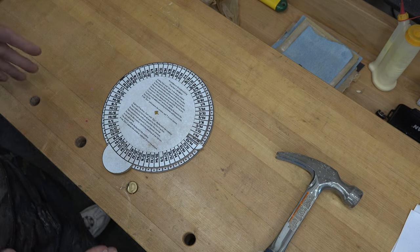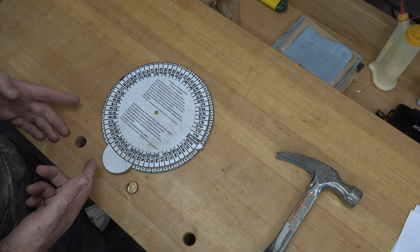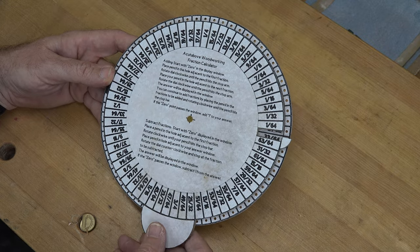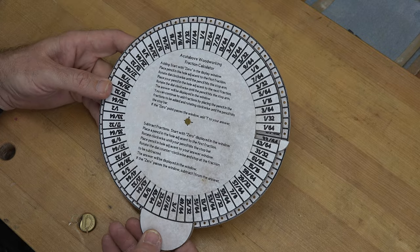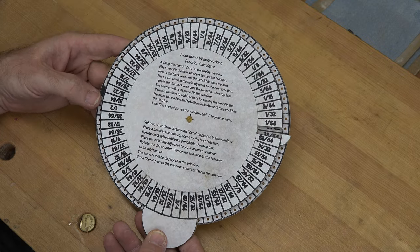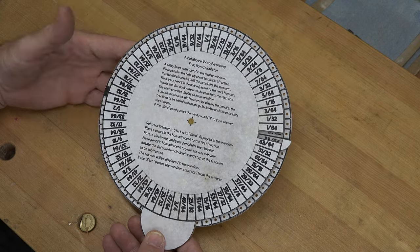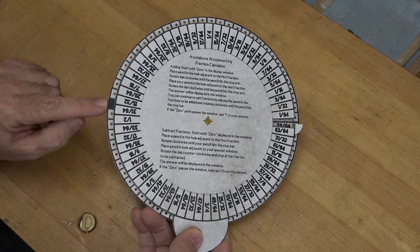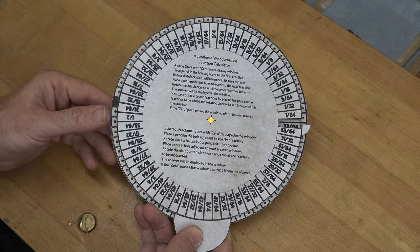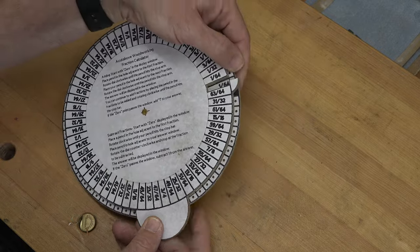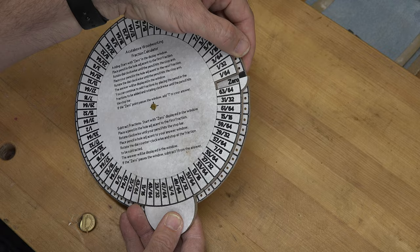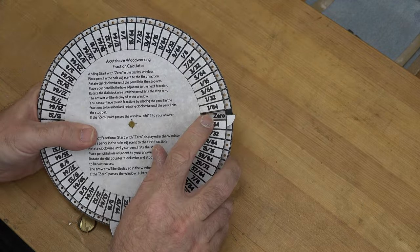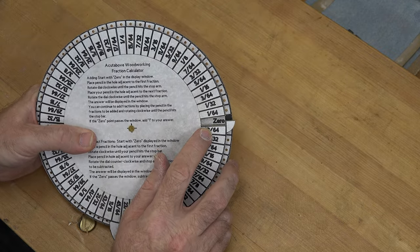So how do you use it? Well let me show you because this thing is really awesome. In order to add any fractions, what you need to do is for starters reset your calculator to zero. You'll know the zero because it's this dark spot that you have over here. So you can spin that all the way around until it reads zero in our answer window.